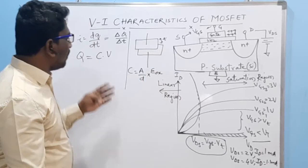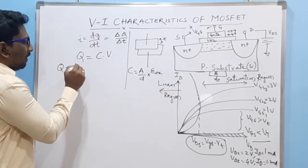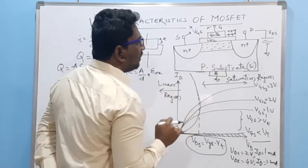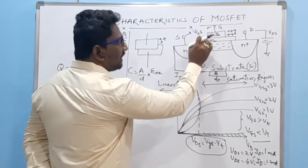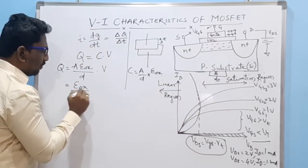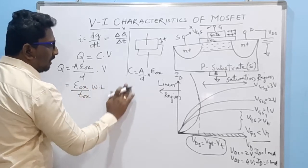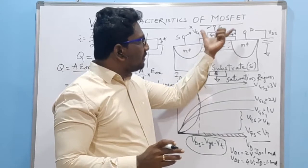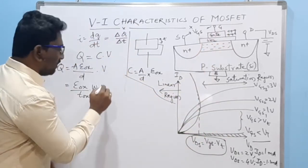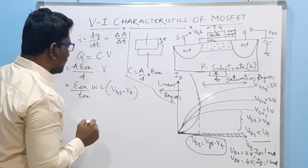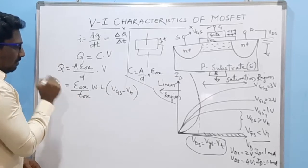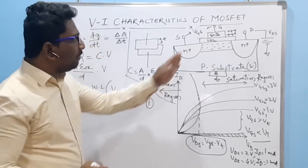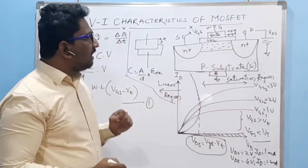Substituting the capacitance formula, the charge Q becomes: Q = (ε_ox / T_ox) × W × L × (VGS − Vt), where the voltage term is VGS minus the threshold voltage Vt. This gives us the formula for the charge present in the channel between the source and drain terminals.